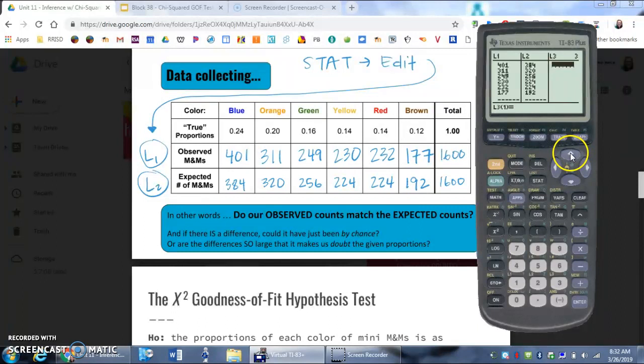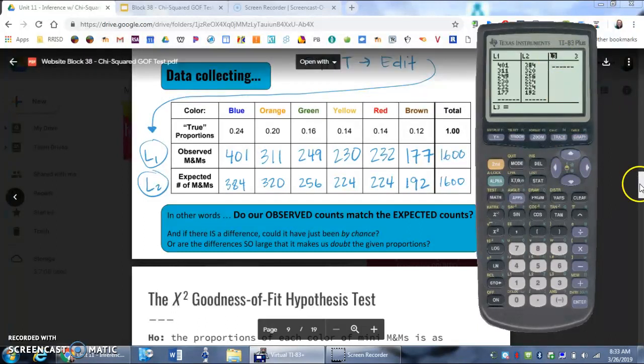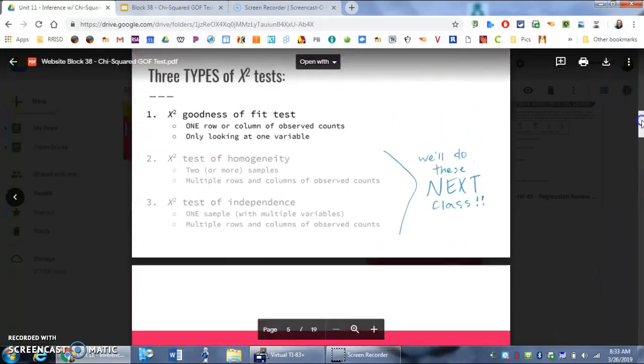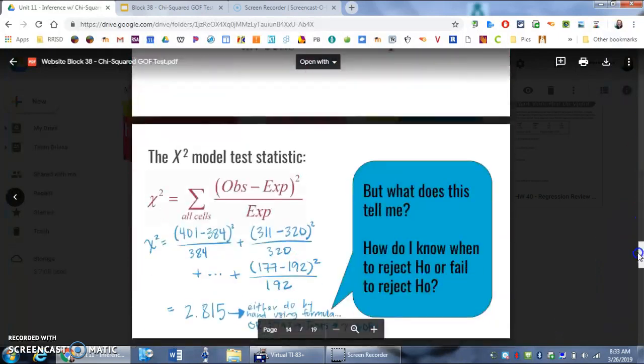I'm going to go over to L3 and go up and highlight L3. I'm basically going to enter the equation for chi-squared. So this guy right here, I'm going to enter that into my calculator.